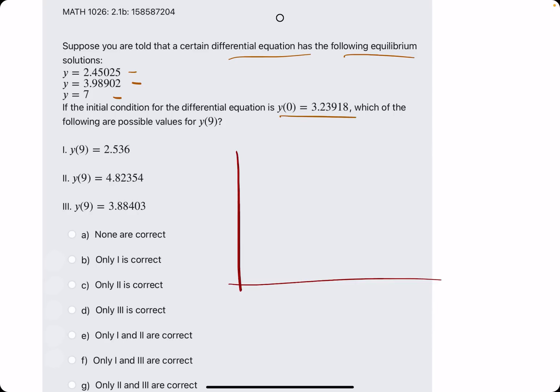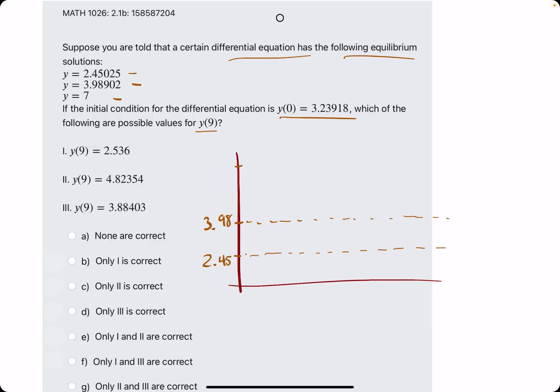Then they tell us if we have this initial condition, which of the following are possible values for y at 9? So what we'll do first is just sketch relatively where these equilibrium solutions could be. So keep in mind these are all y values, so we'll say 2.45, and then we'll put 3.98, do some dashes there, and then we'll do 7 up here.